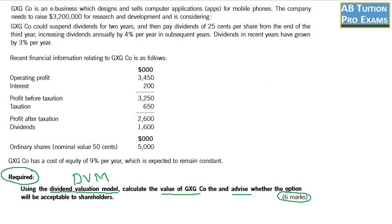One is calculating the value of GXG Co and the other one is advice. Normally advice will have one mark on the exam. It means that we have got five marks for calculation making it total six. For valuation we use three approaches.